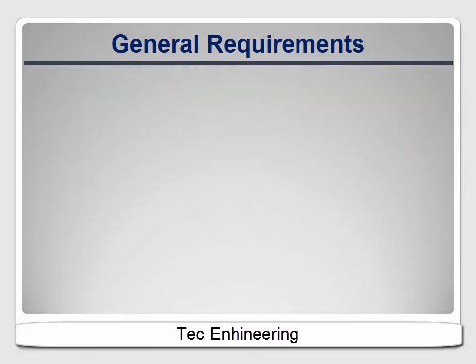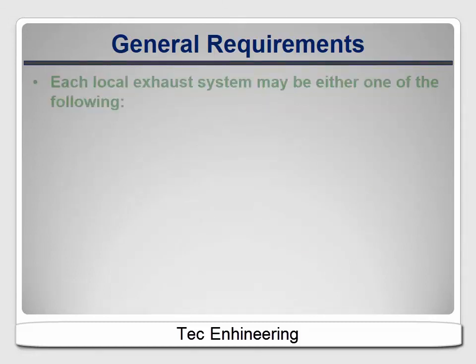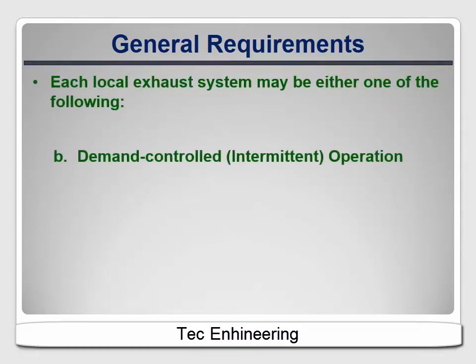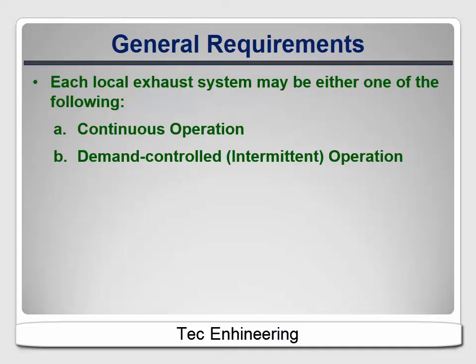The standard gives two options for operation of these systems: demand controlled or continuous. We rarely see continuous systems except in multi-family buildings where a rooftop fan might run continuously to serve multiple apartments below it. One case where a continuous system might be used in a single-family house is if a balanced system like a heat recovery ventilator is installed for fresh air. These are slowly becoming more common and I'll come back to them later in the course.